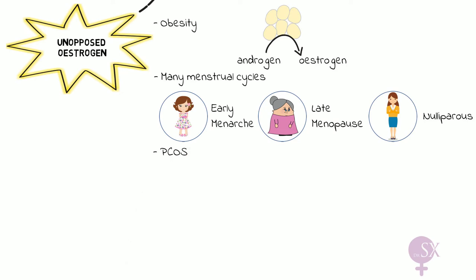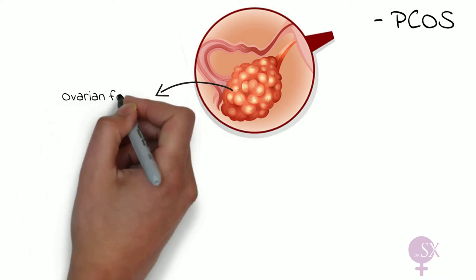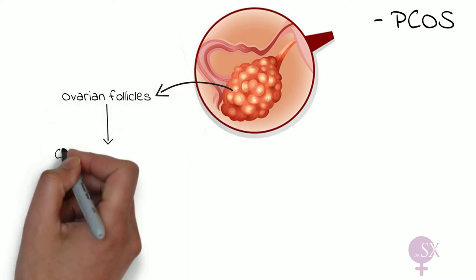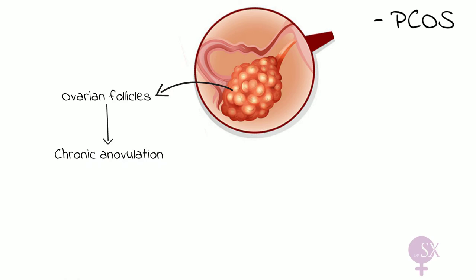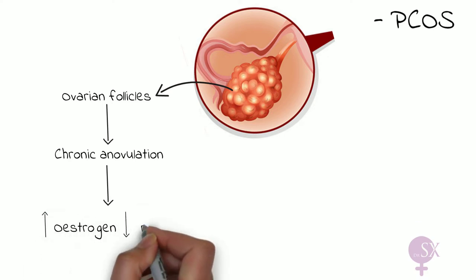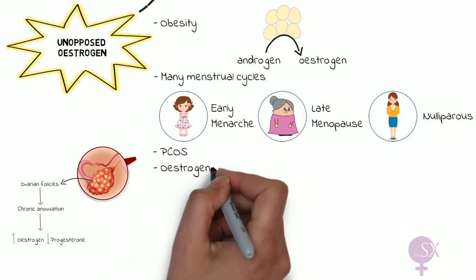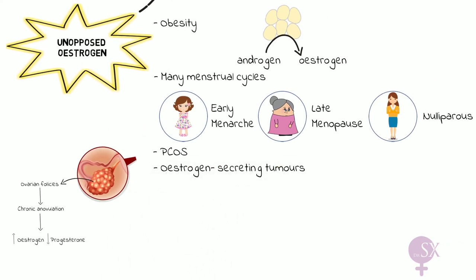Polycystic ovarian syndrome is also a risk factor. The ovary is full of cystic follicles secreting estrogen, but most don't ovulate, so no corpus luteum forms and no progesterone is secreted — leaving excess unopposed estrogen. Estrogen-secreting tumours such as granulosa cell tumours of the ovaries are another risk factor. Estrogen-only HRT is also a risk factor since progesterone is not given to balance the estrogen, resulting in excess unopposed estrogen.